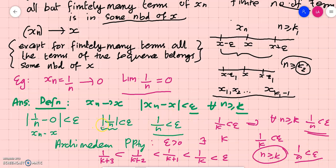So this means our definition is satisfied: 1/n is less than epsilon for every n greater than or equal to k. This k is obtained from epsilon by the Archimedean property. So 1/n is less than epsilon after a certain stage, which means the sequence xn — that is 1/n — is converging to 0. The fact that |1/n minus 0| is less than epsilon after a certain stage means the sequence 1/n converges to 0. We have established that the sequence 1/n converges to 0. It's true. I hope you understood.